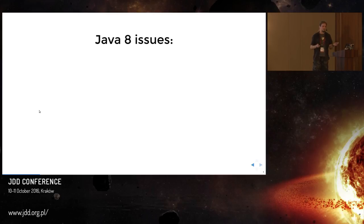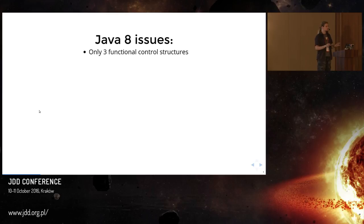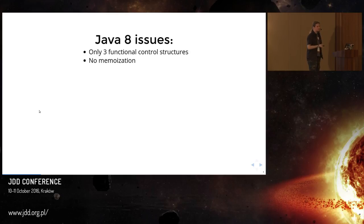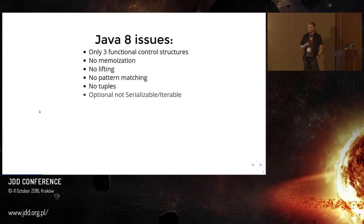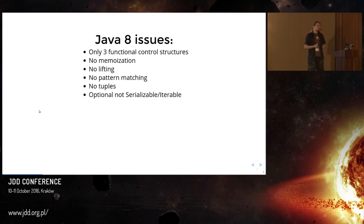In Scala, as you know, we have much more of them. There was something like memoization that didn't exist. Don't worry if you don't know those terms — this is just to show you that this is something you can't live without. There is no such thing as partial function lifting. There was no pattern matching, even no tuples — we still don't have tuples in Java. Optionals, for some reason, were not serializable nor iterable. And the one that was, I think, most painful for everyone is that we got streams and optionals, but some APIs were still lacking usage of them.